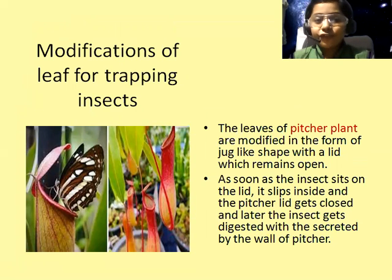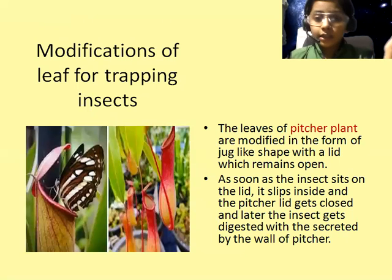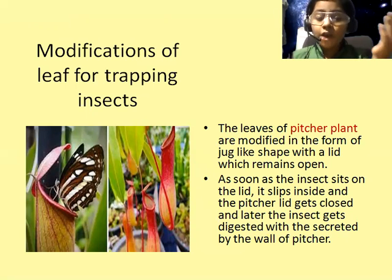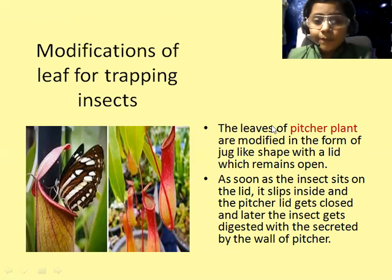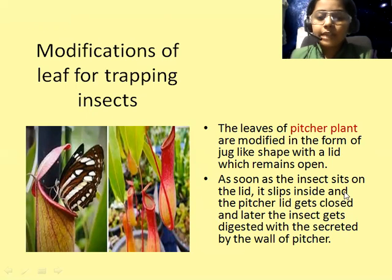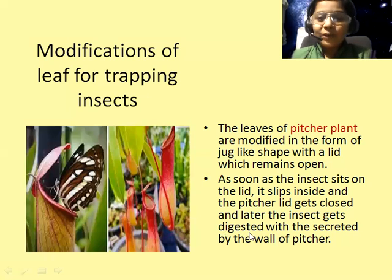Modification of leaf for trapping insects. There are a few plants which are carnivorous — they eat insects. Some of them are the pitcher plant and the Venus fly trap. The leaves of the pitcher plant are modified in the form of a jug-like shape with a lid which remains open. As soon as an insect sits on the lid, it slips inside, the lid gets closed, and later the insect gets digested by fluid secreted by the wall of the pitcher.